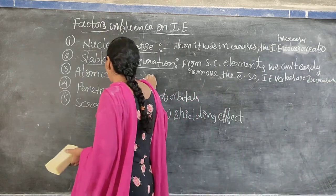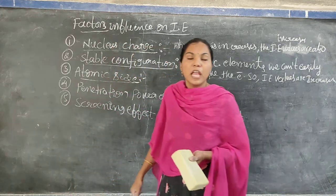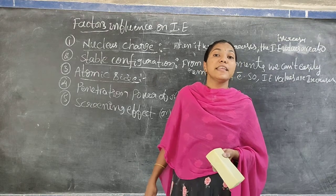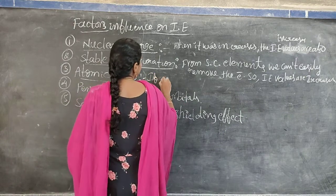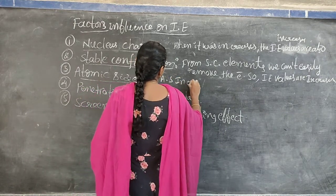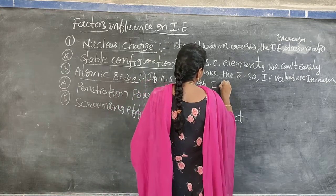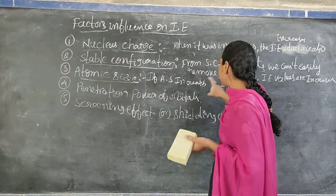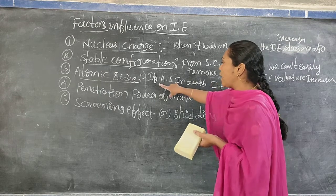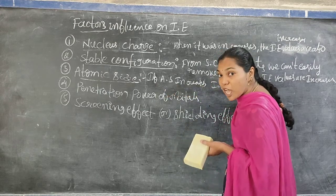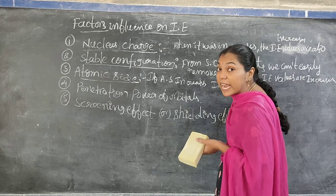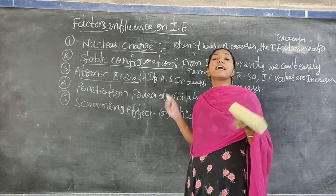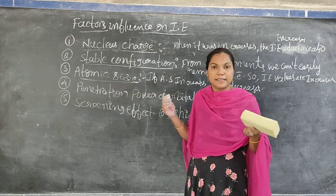The third factor is atomic size. If atomic size decreases, IE values increase. If atomic size increases, IE decreases. Because if atomic size increases, the nucleus attraction power upon the valence electrons decreases — the nucleus is farther from the outermost electrons.